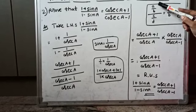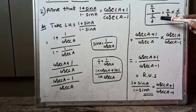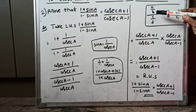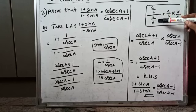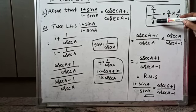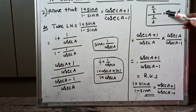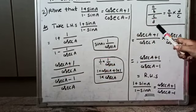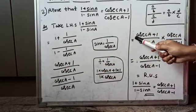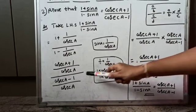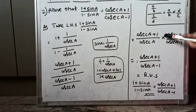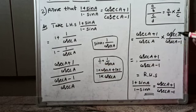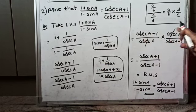We apply the division formula: (a/b) ÷ (c/d) = (a/b) × (d/c). So we take (cosec A + 1)/cosec A and multiply by the reciprocal cosec A / (cosec A - 1). The cosec A in numerator and denominator cancel.